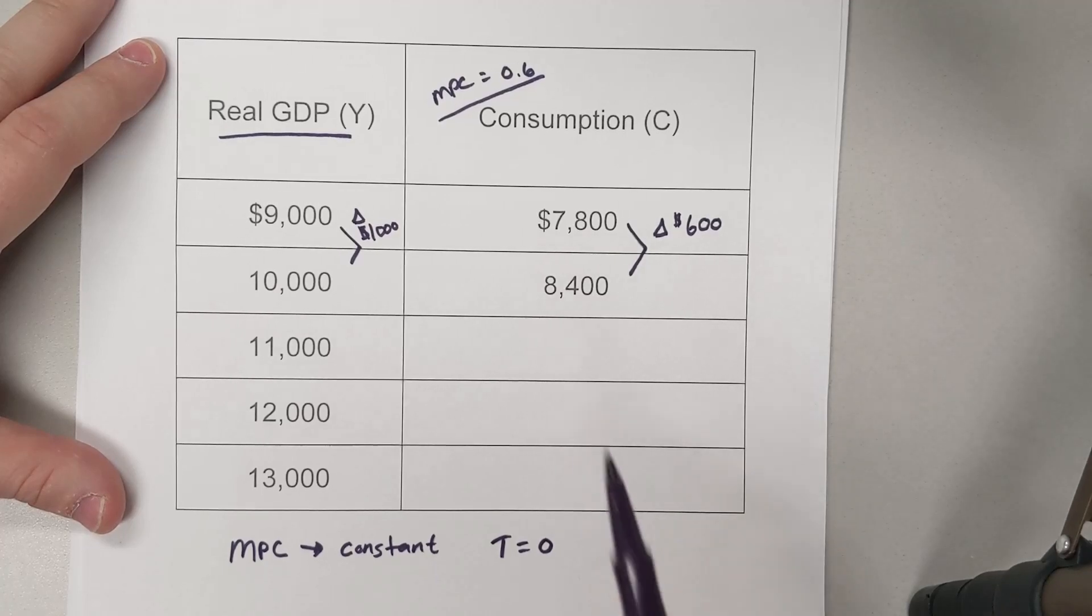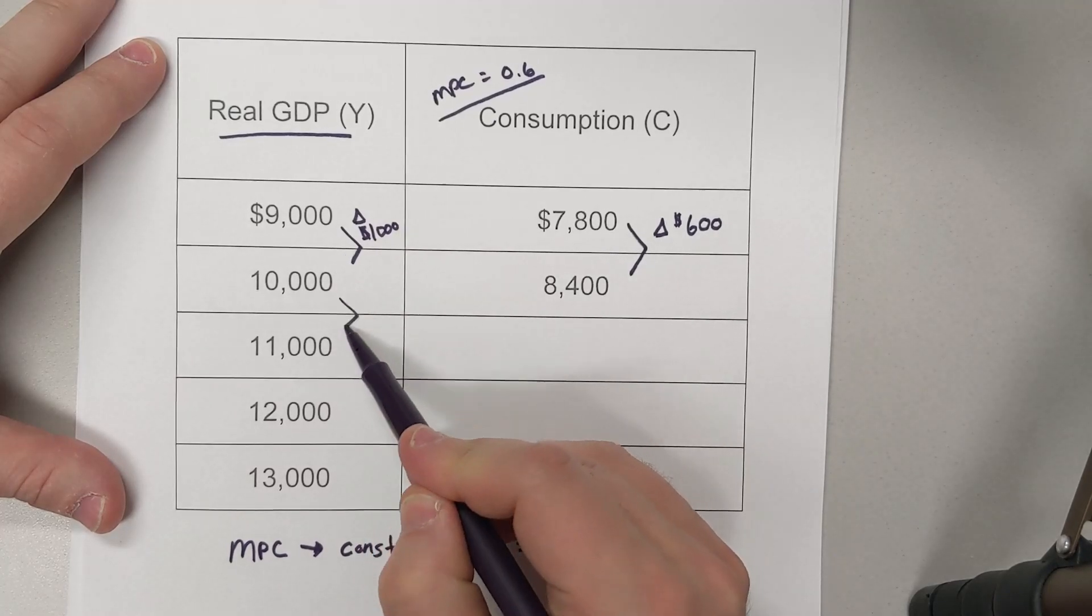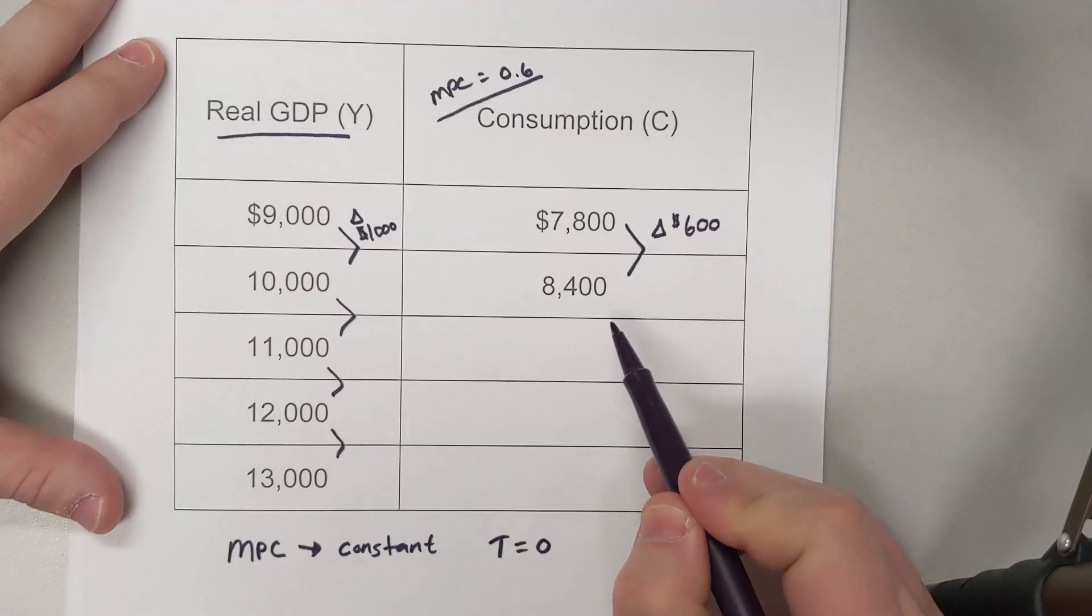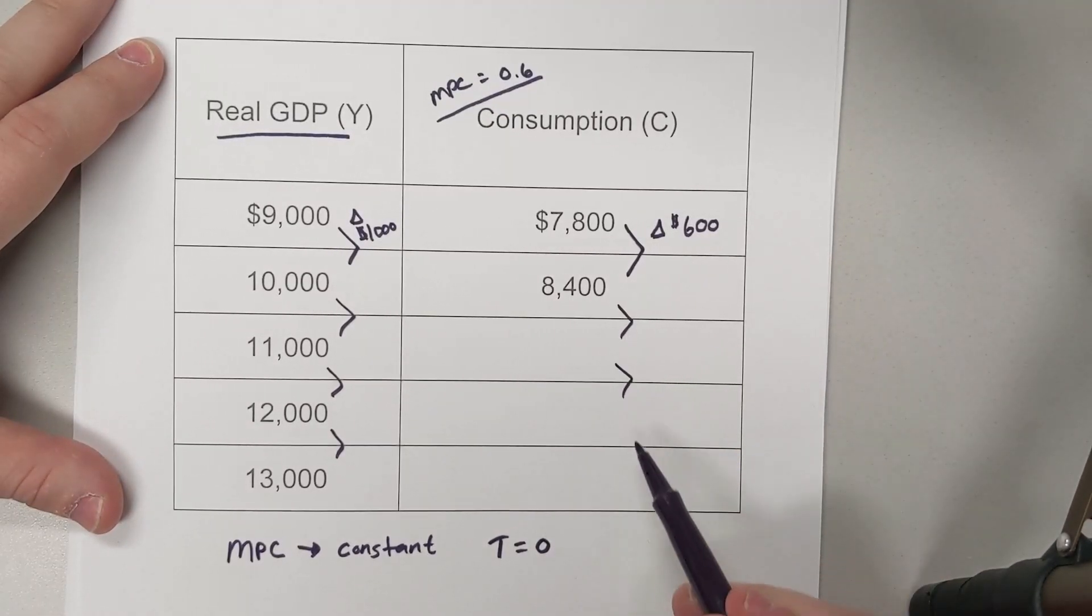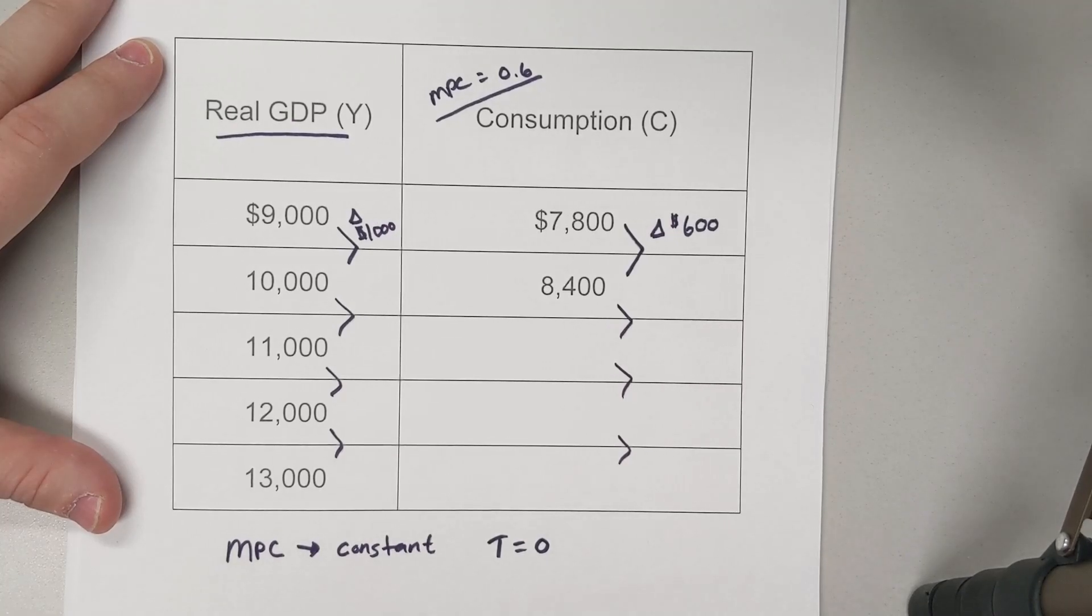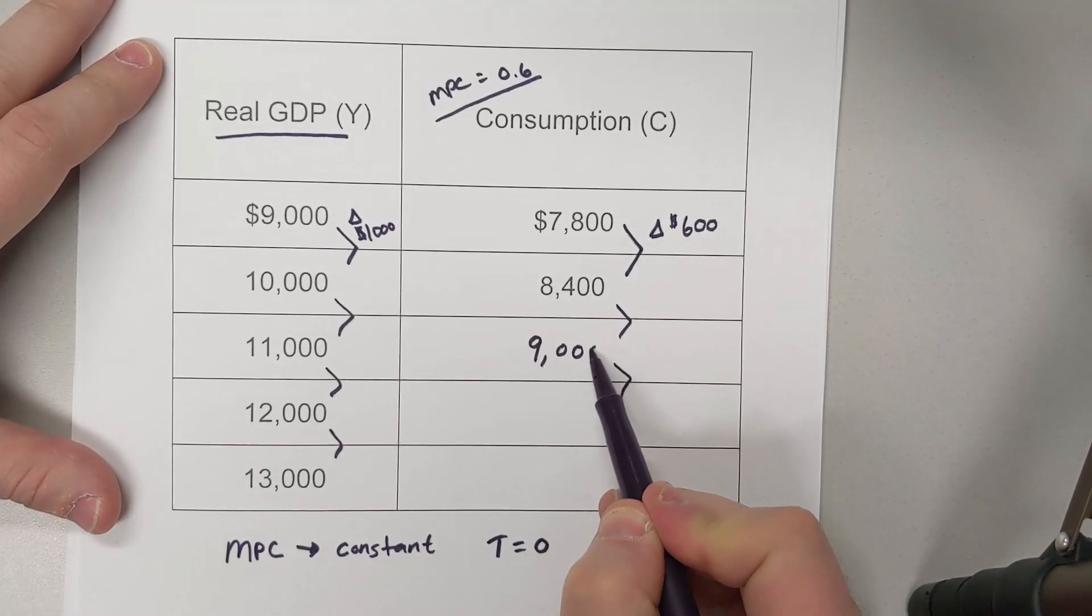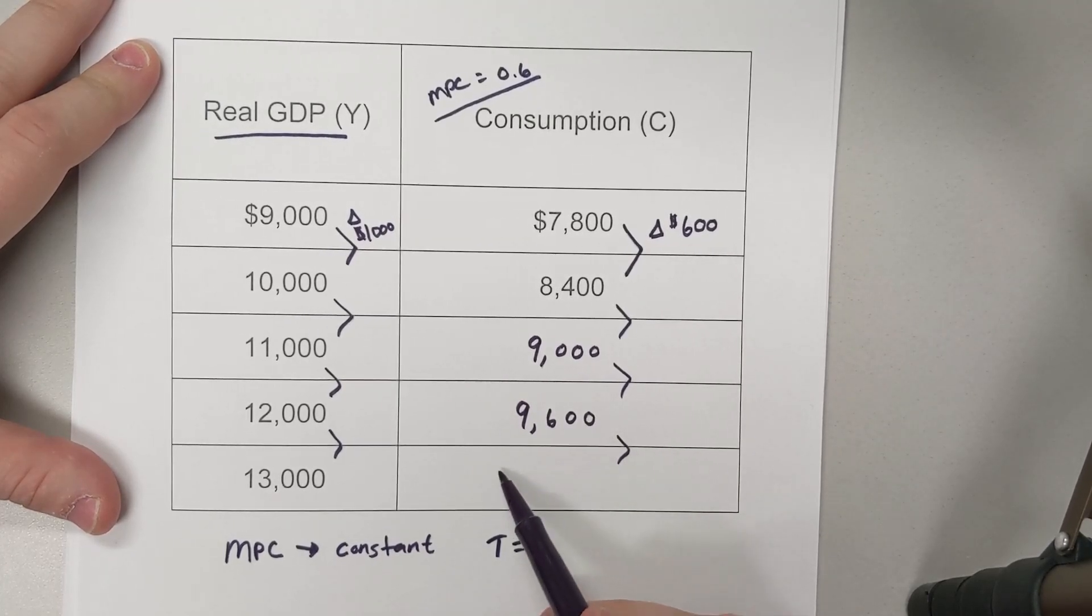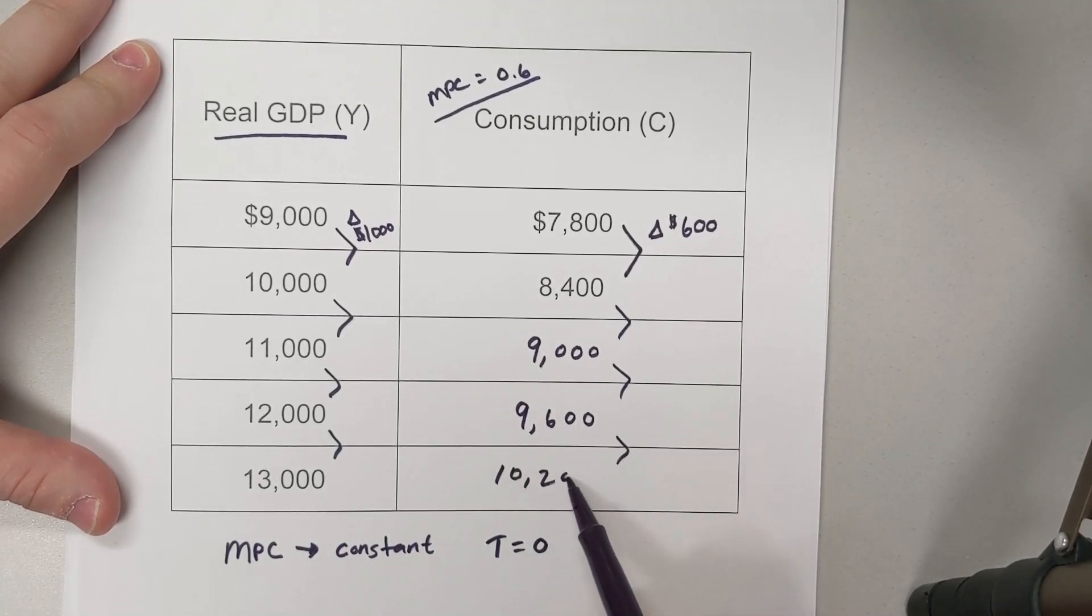A little side note: you then know that the MPS, or marginal propensity to save, is 0.4. So if every single one of the real GDP values is going up by $1,000, that means consumption goes up by $600. This means the values will be $9,000, $9,600, and $10,200.